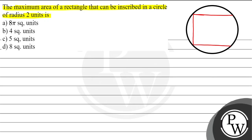Now, the maximum possible rectangle that can be inscribed in a circle is actually a square. This is important - the maximum area of a rectangle inscribed in a circle is achieved when that rectangle is a square.